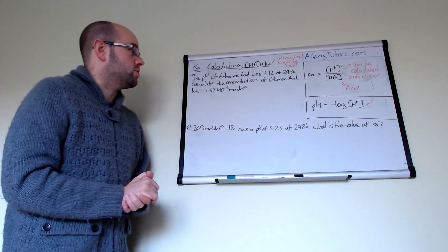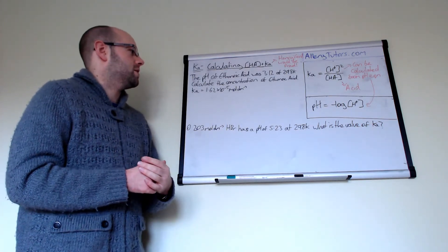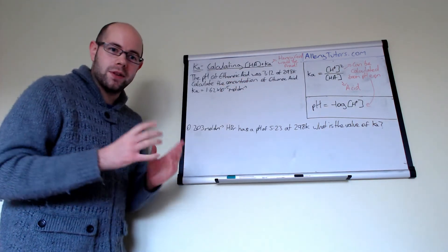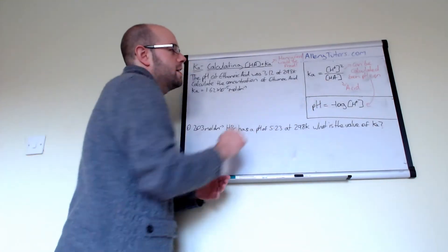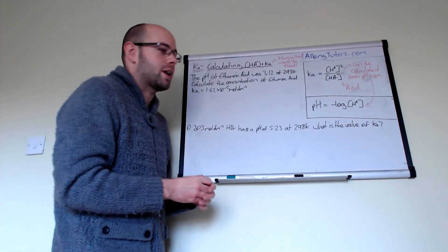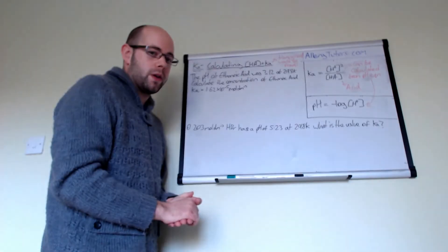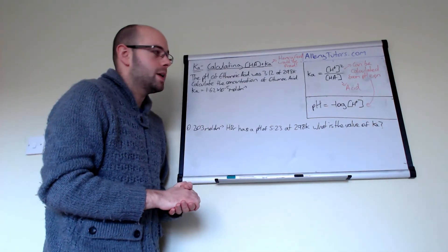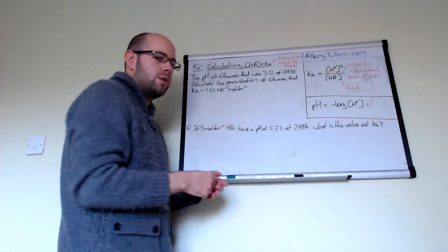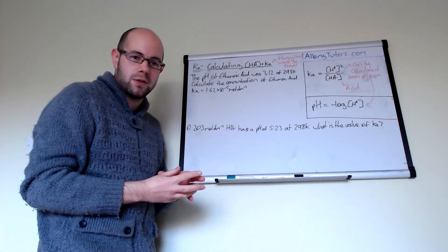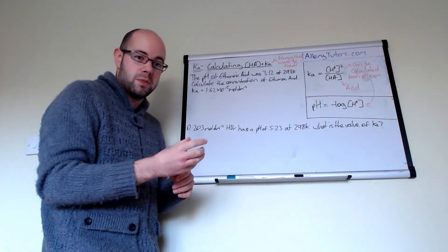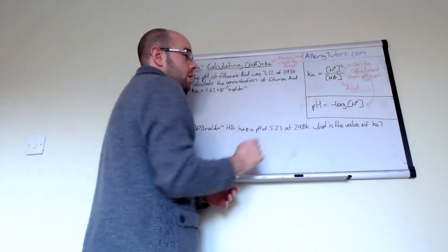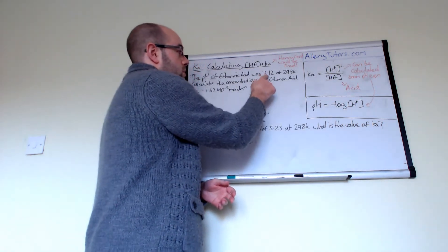The first thing we need to do is work out what it is we're trying to calculate — the concentration of ethanoic acid. The expression we need is the Ka one, because our concentration of ethanoic acid fits in there. To work that out, we need a Ka value and an H⁺ value. The Ka value we know, but H⁺ we don't — we have to work that out using the pH equation, which has the H⁺ bit we need, and we've been told the pH.